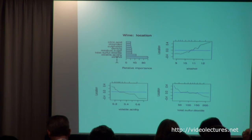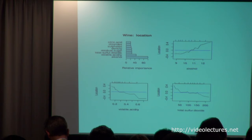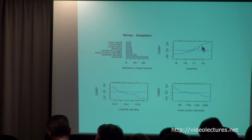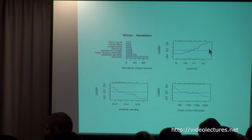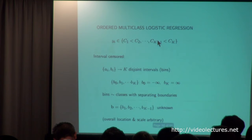Here are the variable importances. By far the most important variable is the concentration of alcohol, and from the partial dependence plot, the more alcohol in the wine, the more the judges liked it — 9 percenters versus 13 percenters. The other important variable was acidity.